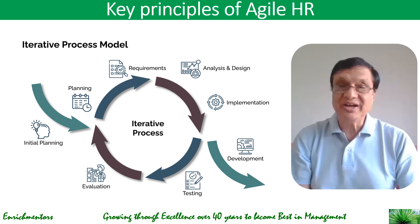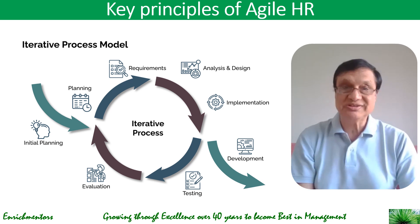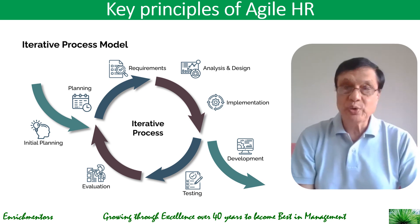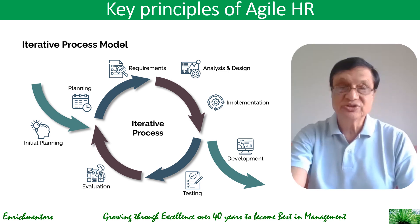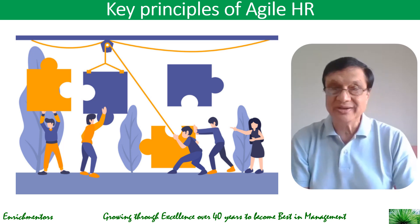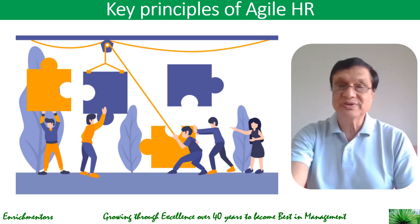The second principle is iterative development, which is core to Agile HR. HR processes like talent acquisition or performance management are broken down into smaller iterative steps, allowing for constant feedback and improvement — it's an iterative process model. Then there is collaboration, where cross-functional teams work together, reducing silos between HR and other departments, both within HR and outside HR.